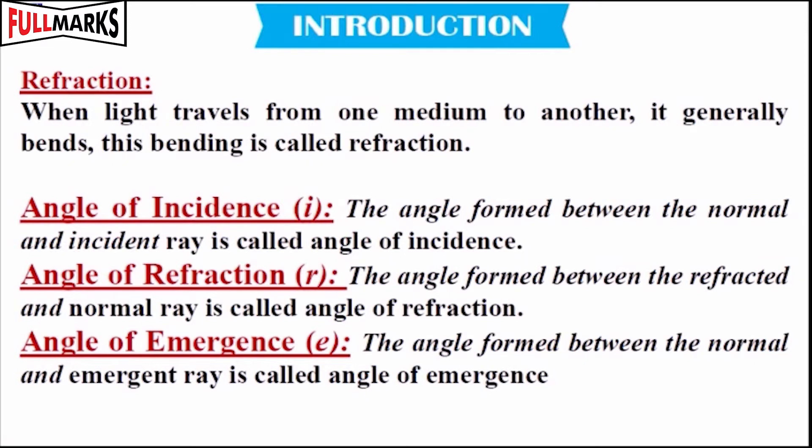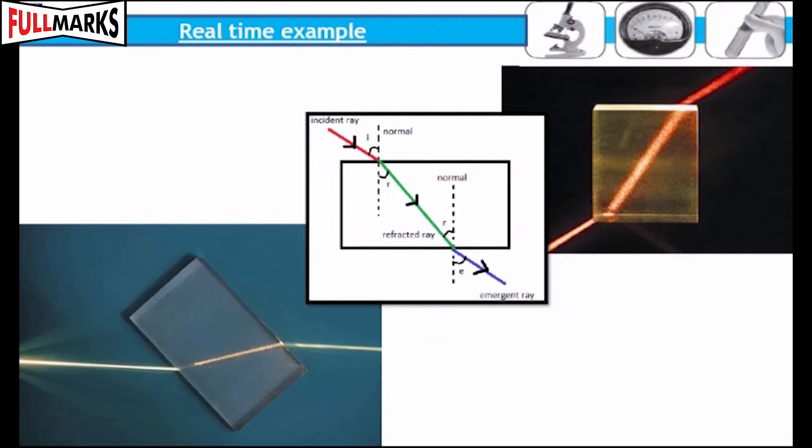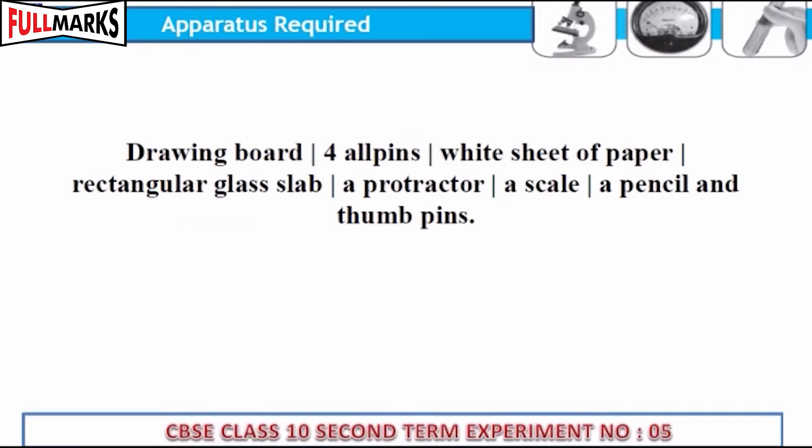Angle of emergence: The angle formed between the normal and emergent ray is called angle of emergence. Real-time examples: Bottom of a tank or pond containing water appears to be raised. Printed matter through a thick glass slab placed on the table appears to be raised. Pencil immersed in a glass containing water appears to be displaced at the interface of air and water.